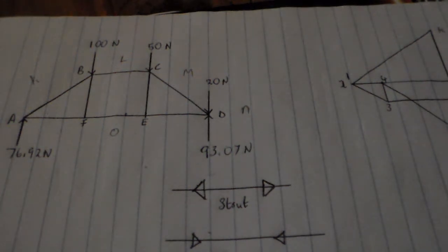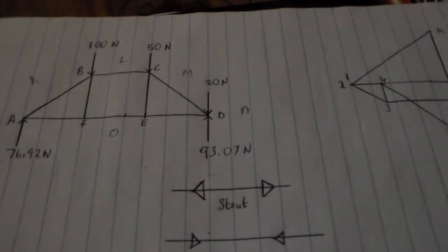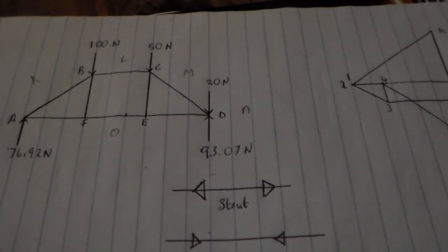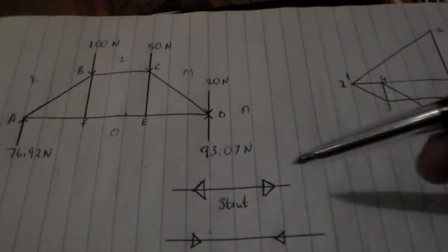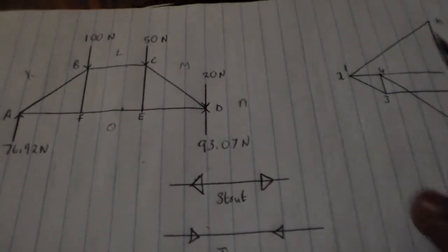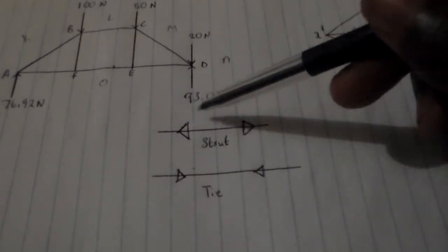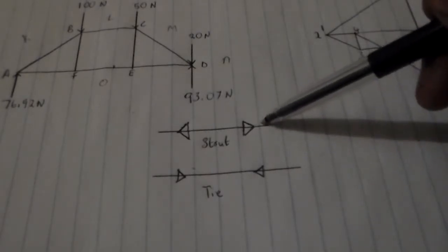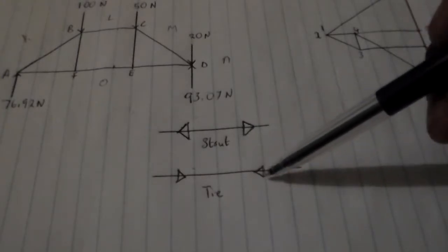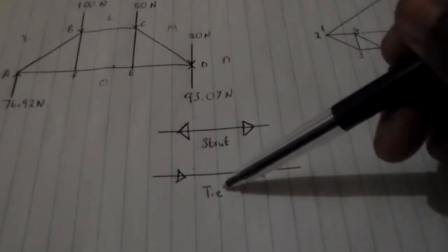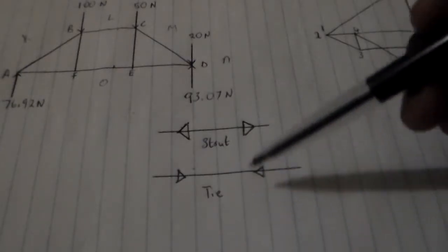Hello guys, this is for Mike. Sorry for taking so long to respond — my work is really keeping me busy. Today we'll discuss how to determine the nature of members. We know that we have a strut and a tie. If the forces are directed into a member, we call it a strut, and if the force is directed outside a point, we call it a tie.